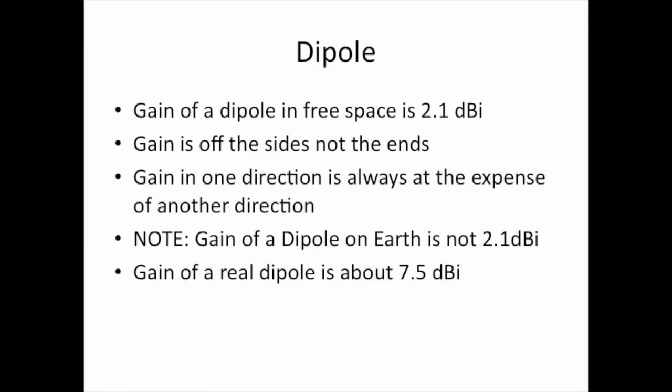The gain of a dipole in free space is 2.1 dBi. The gain of a dipole is off the sides — off the broadside — not off the ends. Gain in one direction is always at the expense of gain in another direction. The gain of a real dipole on earth is not 2.1 dBi — the gain of a real dipole over real ground that you might actually put up is 7.5 dBi. So remember: the gain of a real dipole is 7.5 dBi, not 2.1 dB.